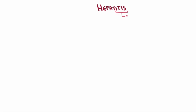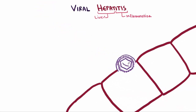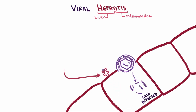Hepatitis, meaning inflammation of the liver, most commonly comes about because of a virus. These viruses tend to target the cells in the liver, and when they get in and infect these cells, they tend to cause them to present weird and abnormal proteins via their MHC class 1 molecules.